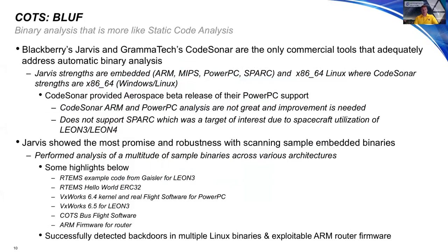Bottom line up front: both Blackberry Jarvis and GramaTech's CodeSonar were pretty much the only commercial tools we looked at based on our market research. Jarvis showed strengths in the embedded world — it fills a gap where CodeSonar has decent performance for x86 Windows and Linux binaries but not much support for ARM, PowerPC, and SPARC. We did look at CodeSonar's beta release for PowerPC, but it's still early on that support level. For embedded systems — spacecraft binaries on ARM, MIPS, PowerPC, SPARC — Jarvis was pretty much the only solution, though it's not a silver bullet either.